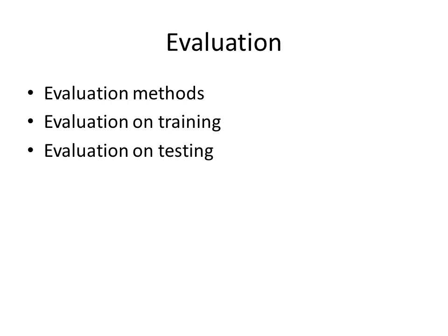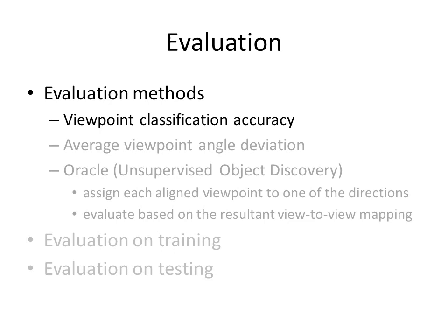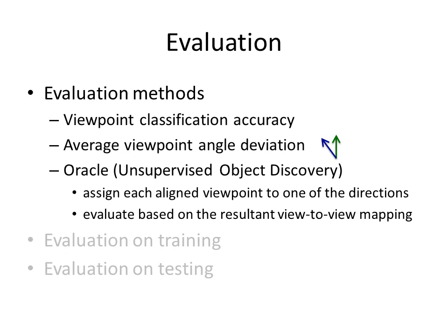Next, we describe how the algorithm is evaluated. Because this is a new problem, we need to define our evaluation methods first. Since we've modeled viewpoint prediction as a classification problem, the simplest way to evaluate is just to measure accuracy. Another evaluation criterion is the average deviation between the predicted viewpoint angle and the true viewpoint angle — for example, if the green arrow is the true viewpoint and the blue is our prediction, we measure the angular difference between the two. Because our algorithm is aligning the panoramas without supervision, we define an oracle to assign each aligned viewpoint to one of the viewpoint directions and evaluate based on the resultant view-to-view mapping.